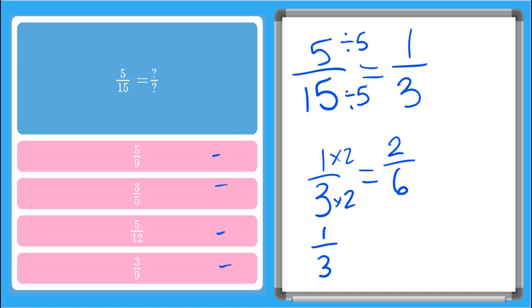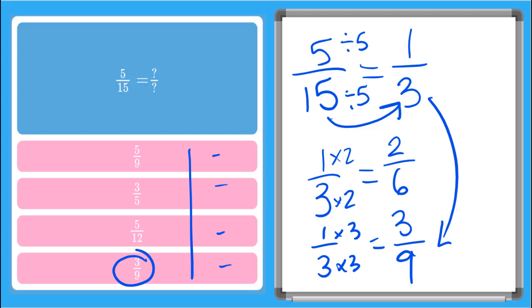So what if I go back to my one-third, and I multiply my top and my bottom by 3? That would give me 3 on top and 9 on the bottom, which does look like that one there. So see, this one was a little trickier. We had to find essentially two equivalent fractions to have one of our answers show up here. Nice work.